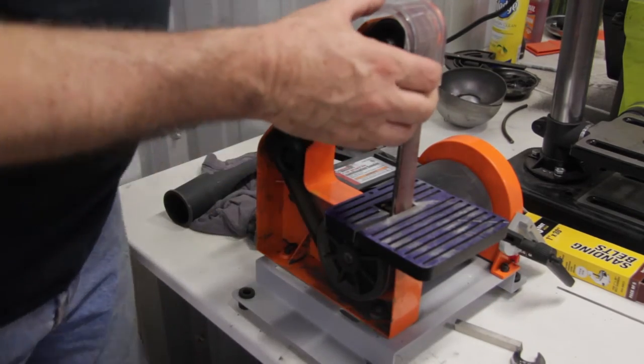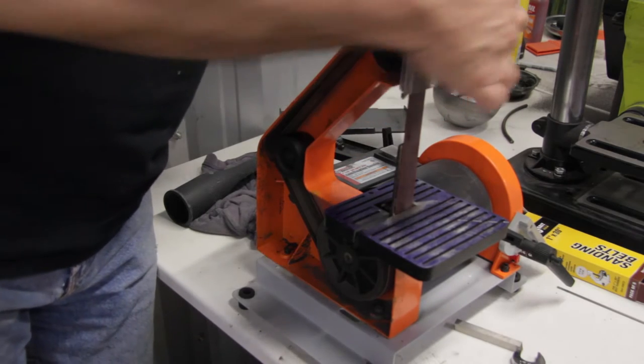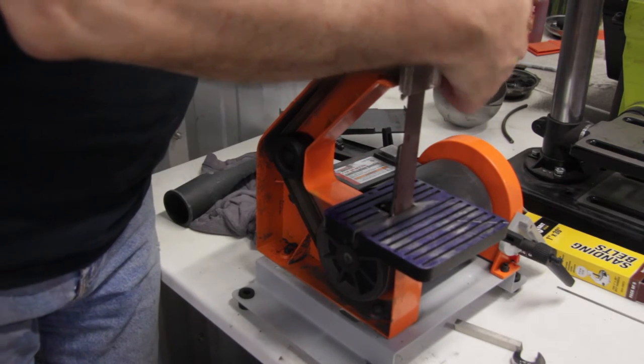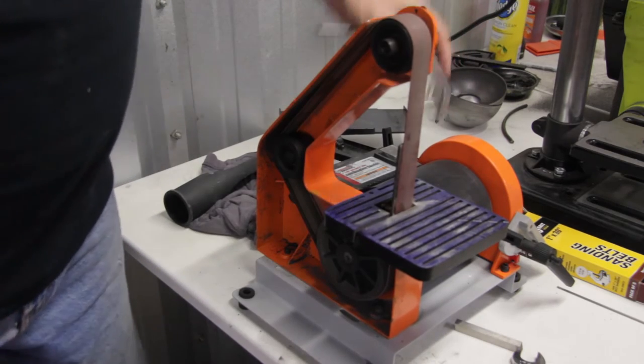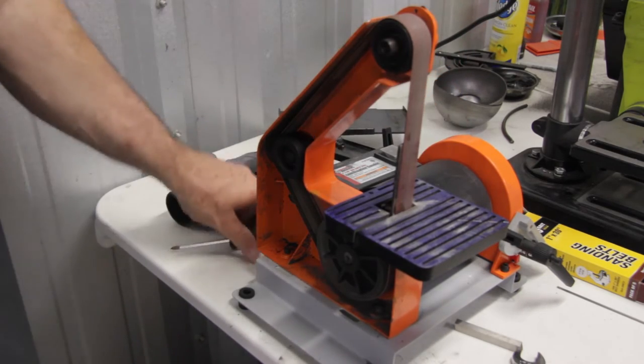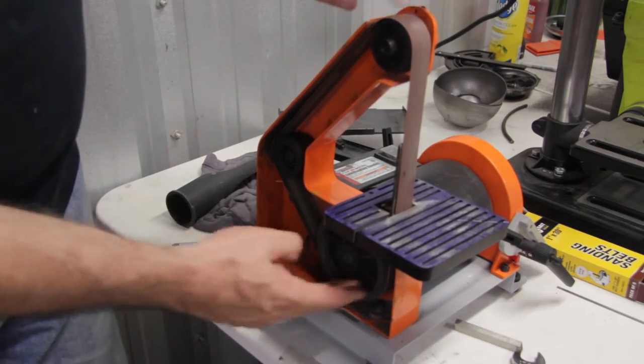And then right at the very top on the clear plastic cover, there's a single cross point screw. You can loosen that and then pop off the plastic cover. Now you have access to all of the rollers and the belt.